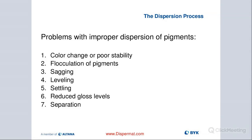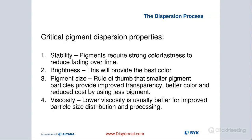Gloss is reduced, and increase in haze is another issue. Separation also happens if you improperly disperse. It's really important to remember that we need good stability to have better color fastness, and that helps us with fading over time. Our brightness will also be improved. The rule of thumb is that the smaller our pigment particles, the better our overall appearance — and that allows us to use less pigment and cut down on volume, reducing cost.